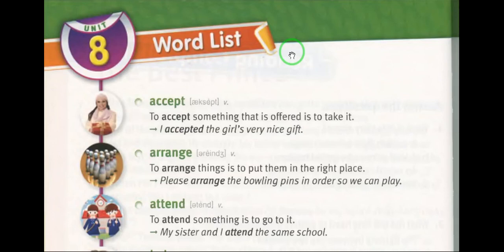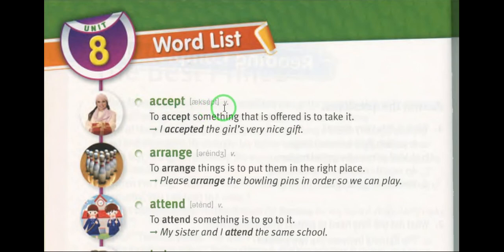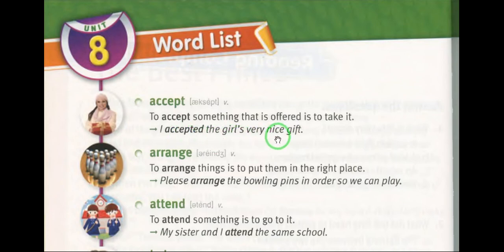This lesson covers the four thousand essential English words, the kitab, Unit Number Eight word list. Word one: accept (verb) — to receive or agree to something. For example: I accepted the girl's very nice gift. Accept kabla walia manal. The girl's very nice gift: angel a khaista tofa.